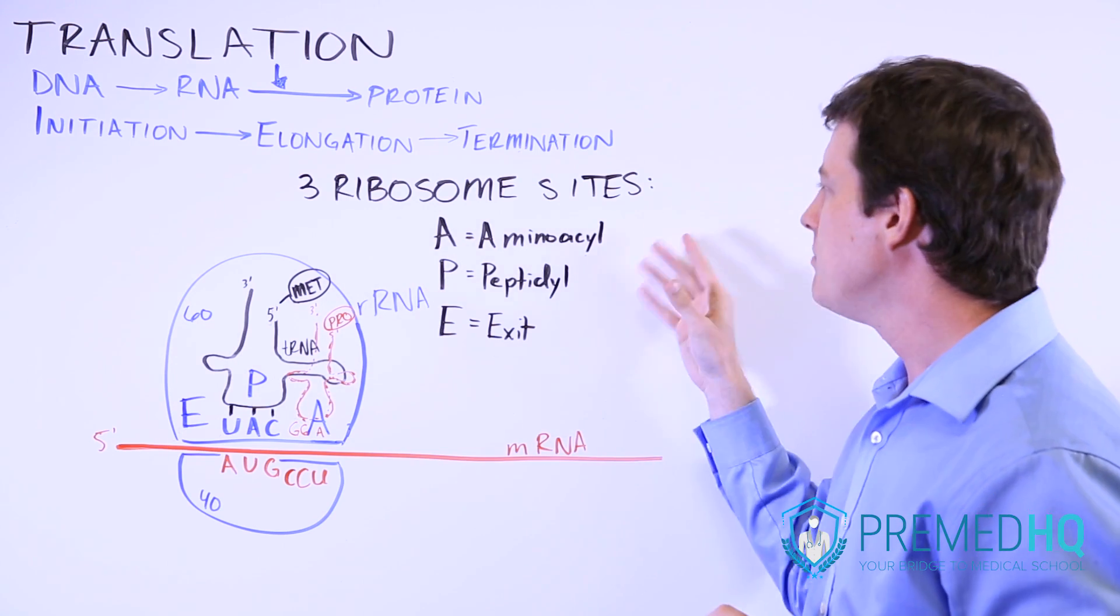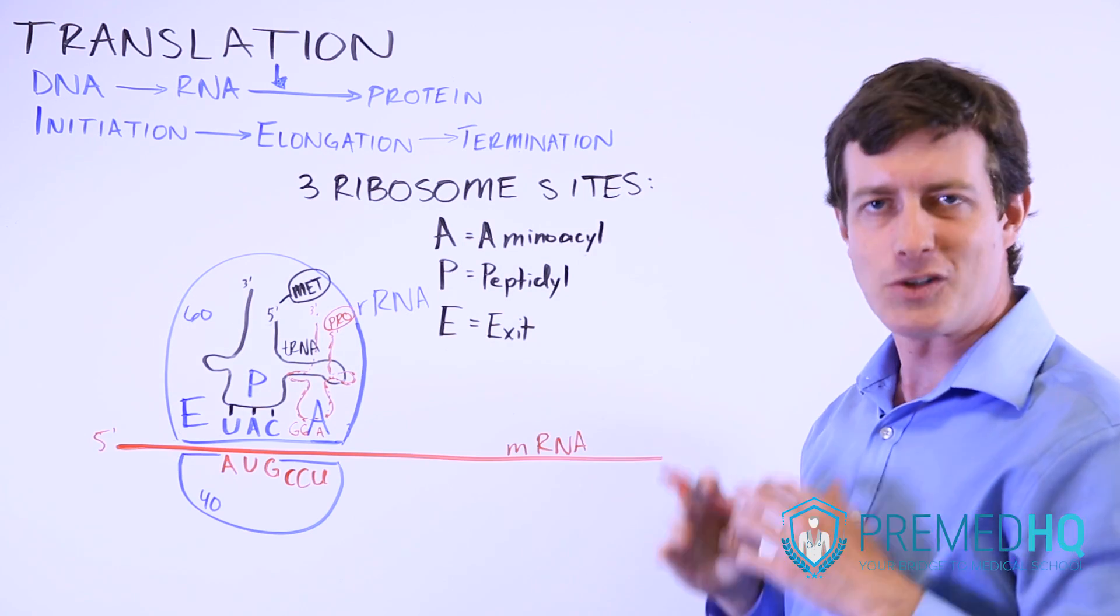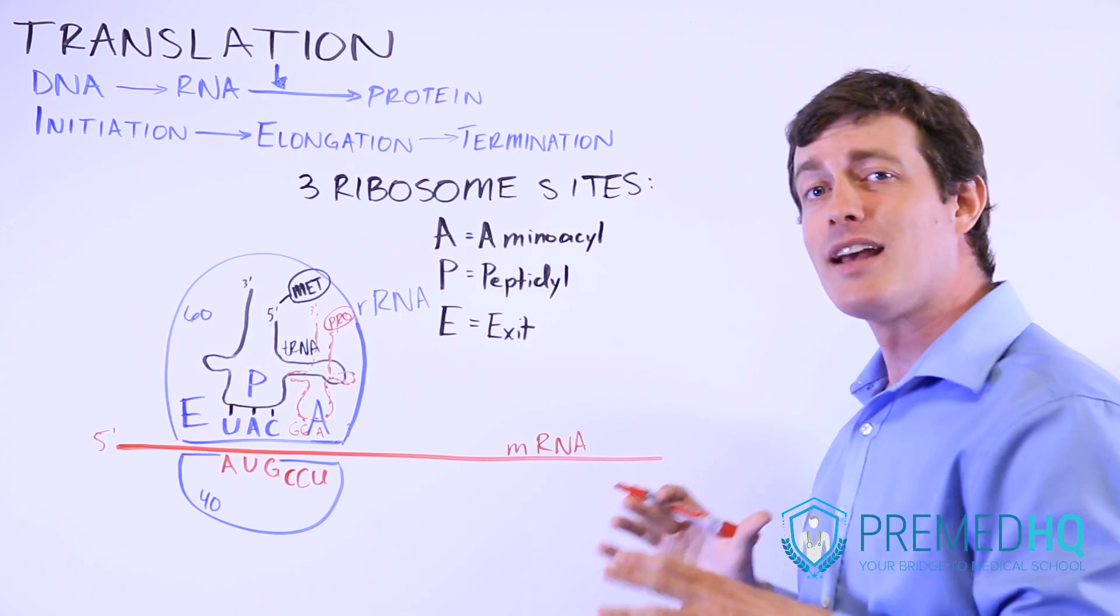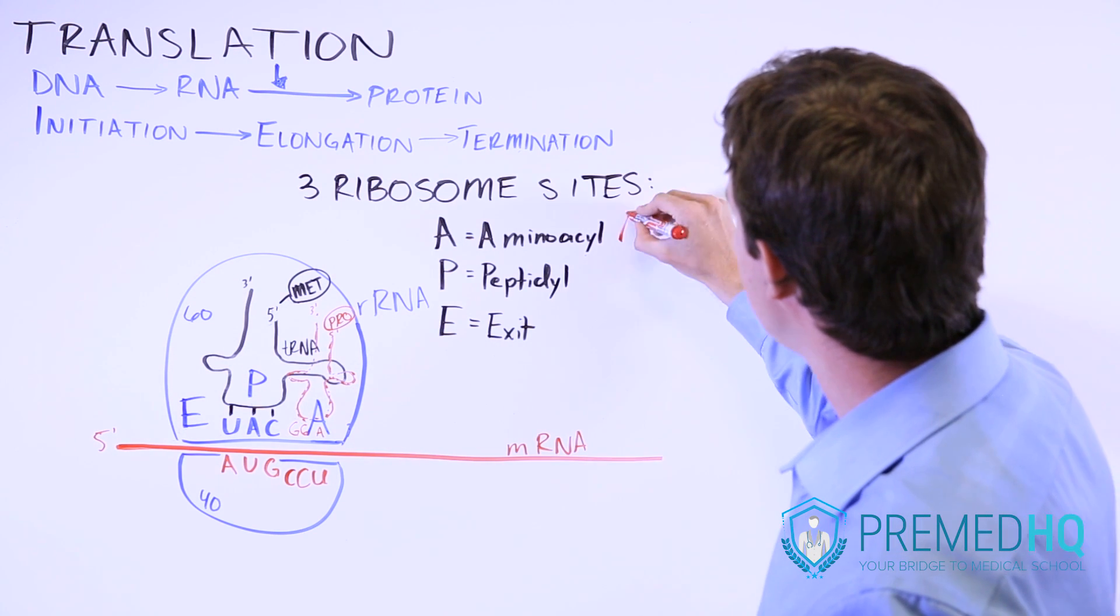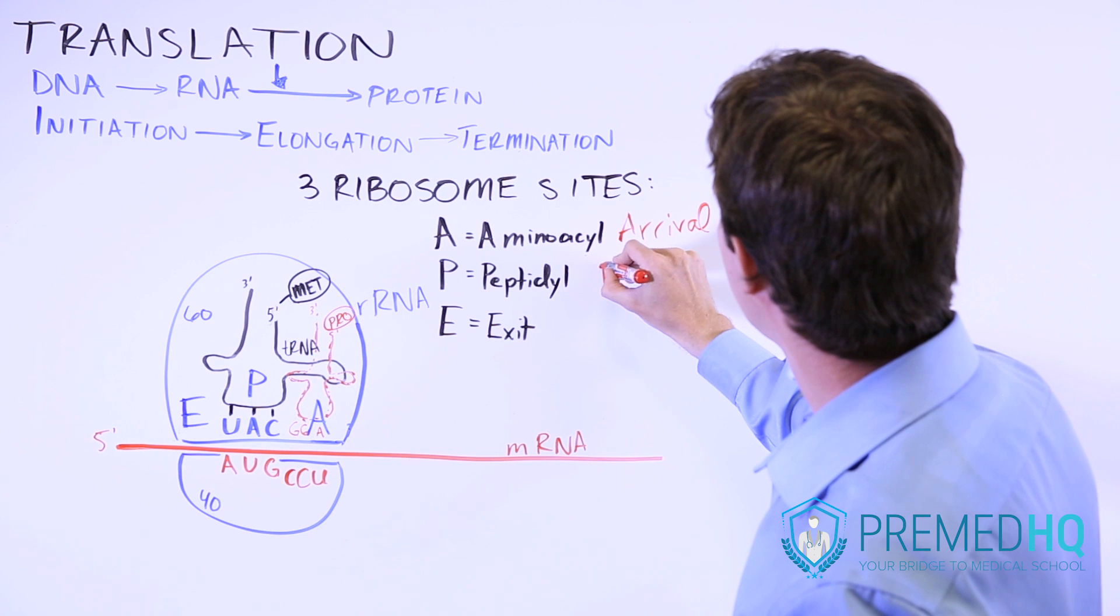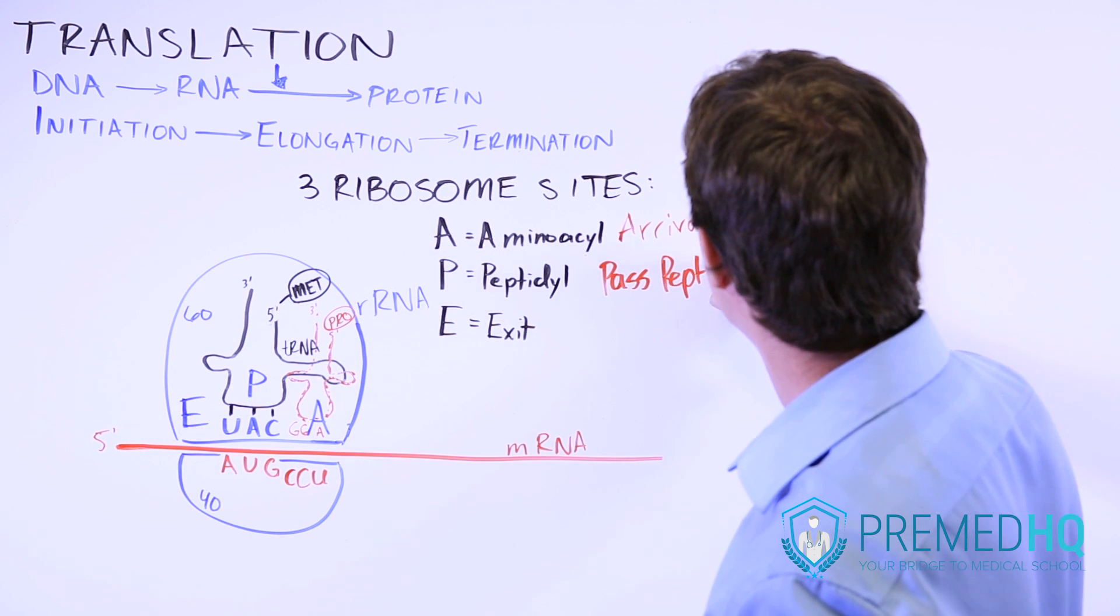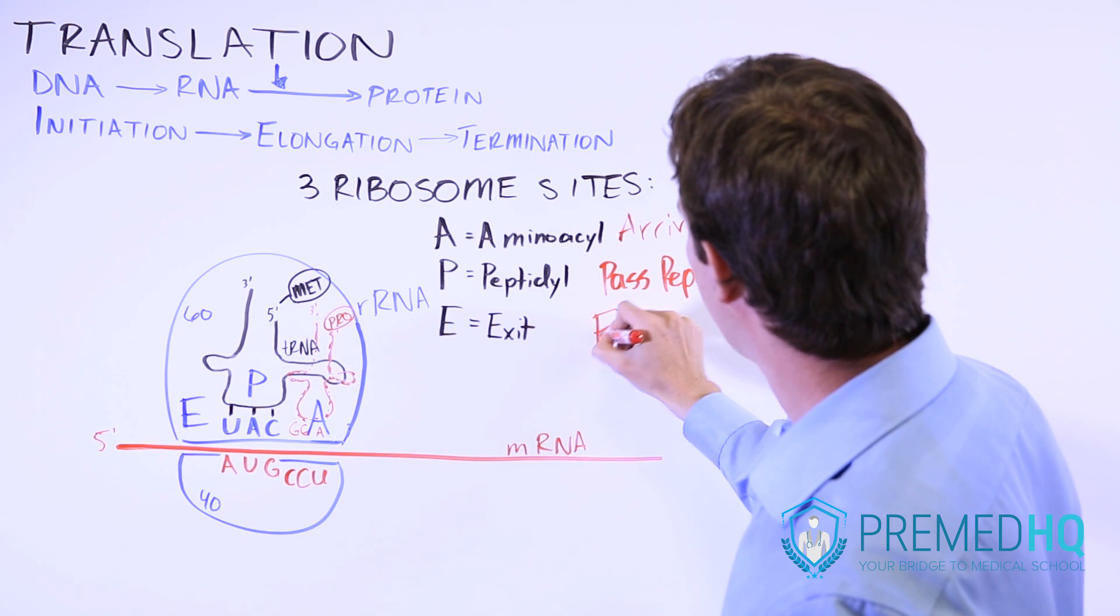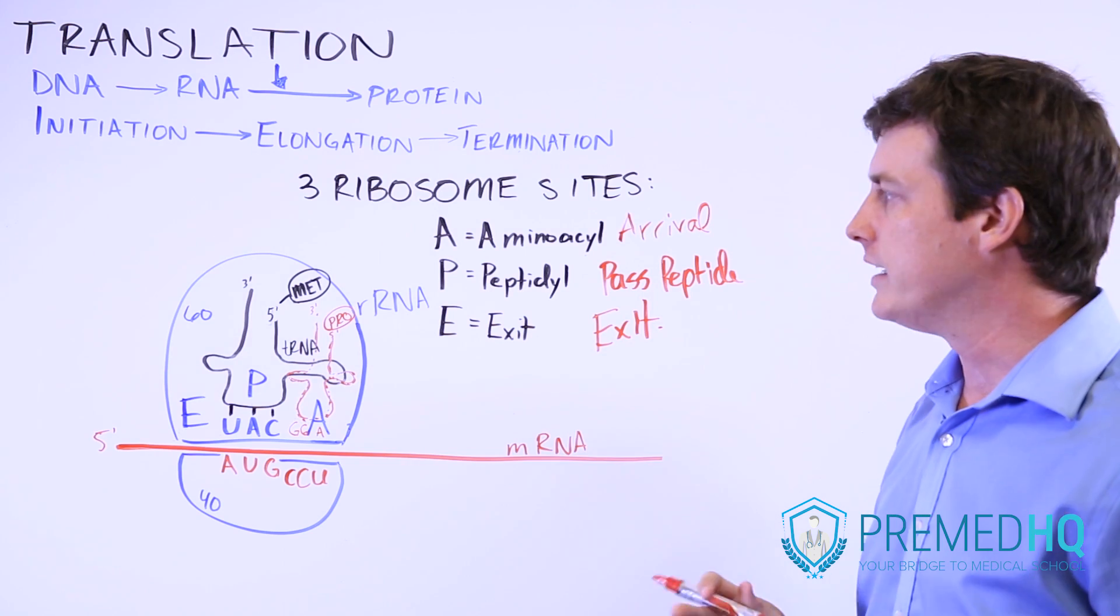Now these names can be helpful if you understand the organic chemistry behind why they got those names, but I think it's easier to think of them instead as A being the arrival site, P being the pass peptide site, and E still being exit, because that's a very good description of what this site does.